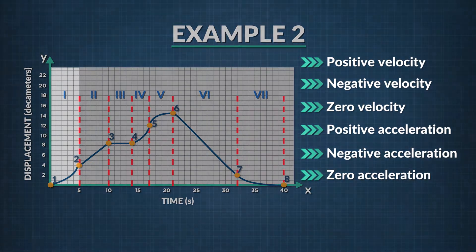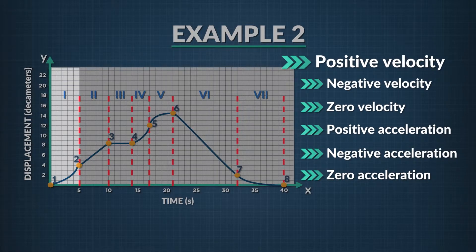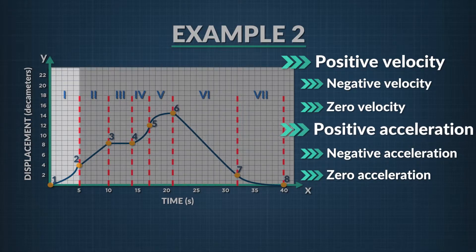Let's begin with region 1. Our displacement versus time data curves upward. This means that not only is velocity positive, because the slope at each point is positive, but there is also positive acceleration, since the slope increases over time.